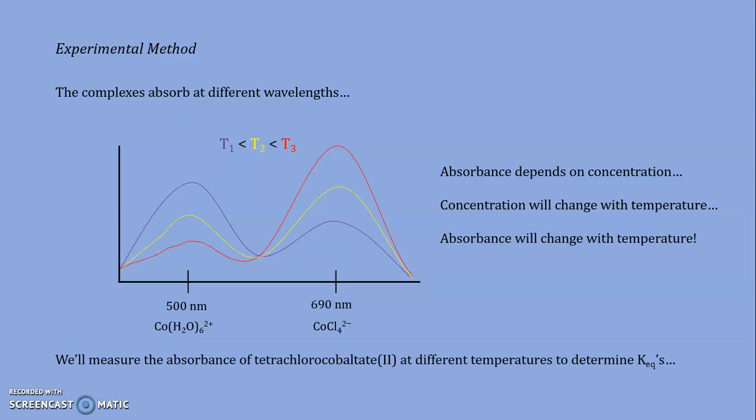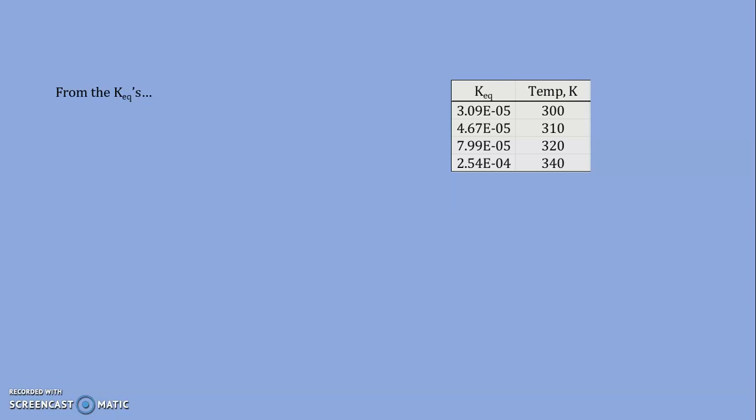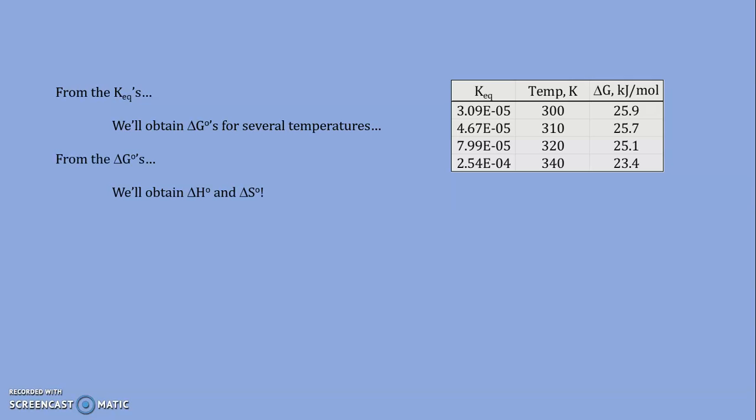In this experiment, we'll find ourselves measuring the absorbance of the tetrachlorocobaltate complex at different temperatures, allowing us to determine the equilibrium constant for the different temperatures. Once we have the equilibrium constants for different temperatures, we then go about having our fun. We'll first begin by calculating the free energy change for each temperature based on that equilibrium constant. Next, we'll determine the enthalpy and entropy change. This is simple enough.